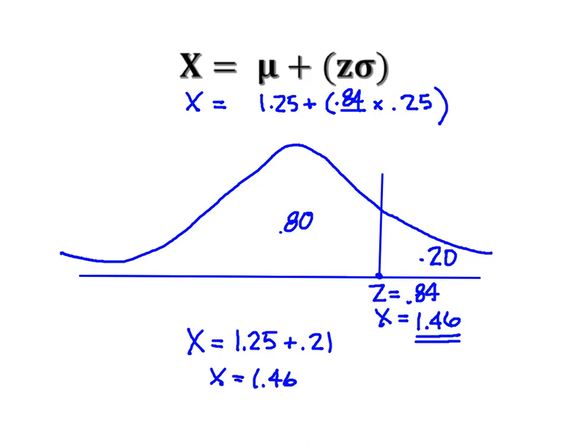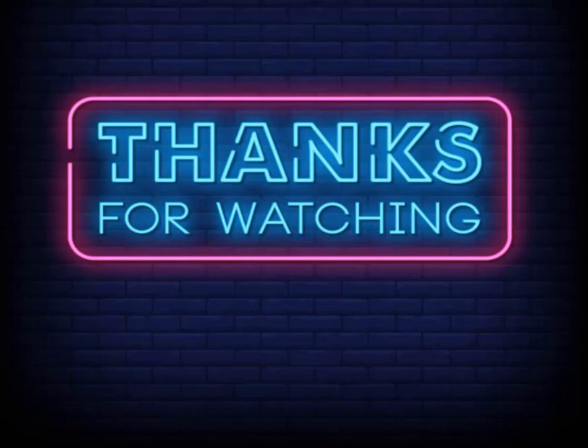Just one quick note before we leave. You'll notice that this formula only has a plus sign in it. We only need the plus sign because had I been solving for an area down here, my z-score would have been negative. The fact that I plugged in a negative value for z would have taken care of moving my value of x to the left. So you don't need two formulas. You simply need this one and let the sign on your z-score move you either to the right or to the left of the mean. As always, I hope you found this useful and thanks so much for watching.